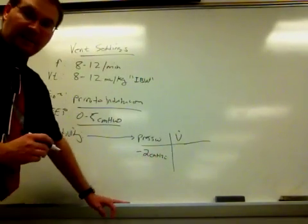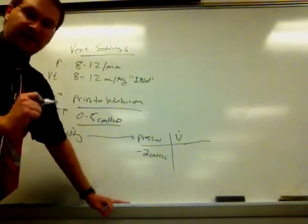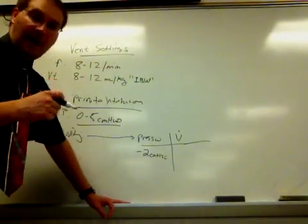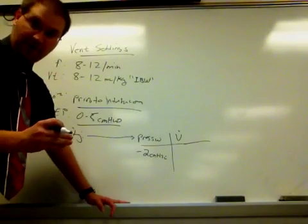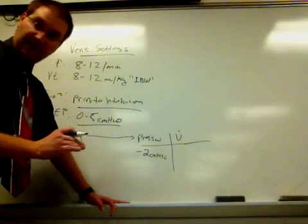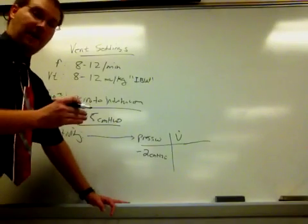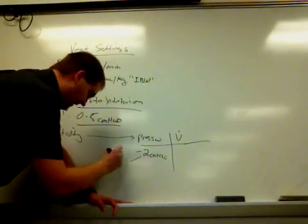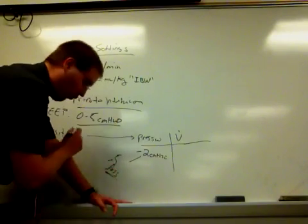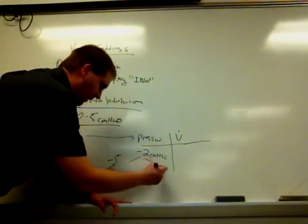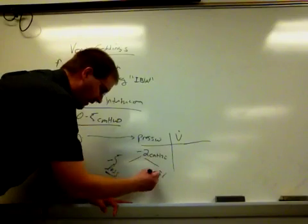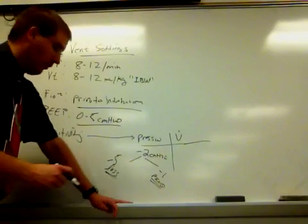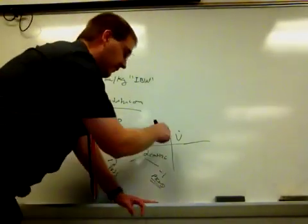If I make the ventilator less sensitive, it makes it—a less sensitive ventilator means that the patient has to draw down with much more force to trigger it. A more sensitive ventilator means that the patient doesn't have to draw down with as much force. So if I set my pressure at negative 5, that would be less sensitive because the patient has to work harder to trigger it. Whereas if I set it at negative 1, the ventilator will be more sensitive because the patient doesn't have to draw down as hard. So hopefully that makes sense.